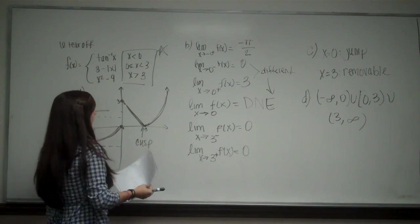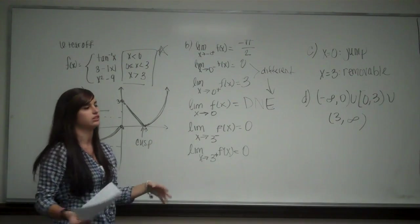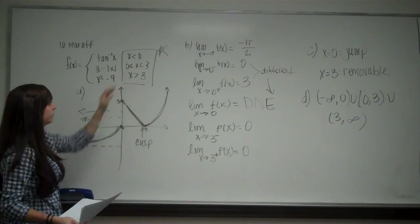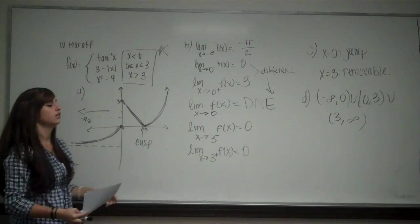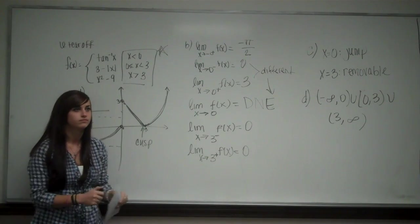So usually once you get the graph, the rest of it kind of flows from there. The important part is being able to graph it though. So make sure when you're graphing it, you're looking at your restraints over there on the right. So this is number six of your tear off.